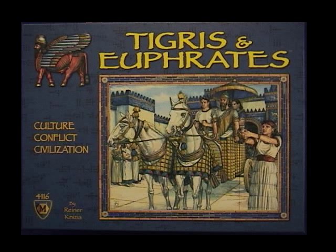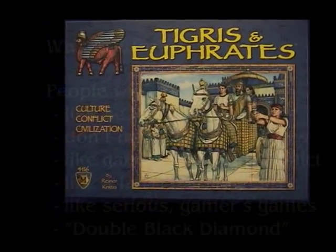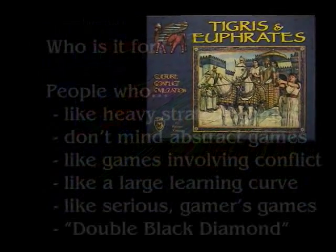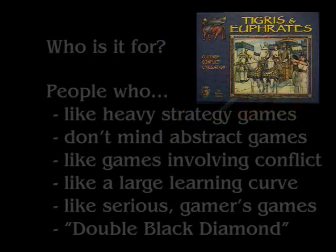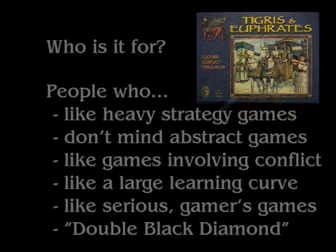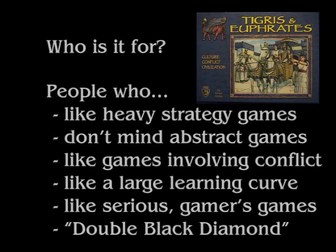Tigris and Euphrates — this game is for people who like heavy strategy games. It's also for people who don't mind if the game is more abstract and not really thematic. This is not really going to feel like developing ancient civilizations; it's really, at its core, a heavy abstract strategy game. There's also a lot of conflict going on in this game, a lot of back and forth. And if you have people who don't like that, it may not be for them. This game also has a large learning curve, so if you have people who like getting good at games and playing them over and over again, then this is definitely going to be a winner. If you have people who like to play a new game every week and this isn't going to see the table much more than once or twice, stay away from this one.